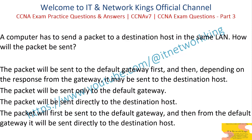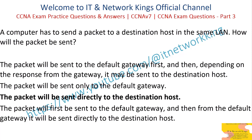A computer has to send a packet to a destination host in the same LAN. How will the packet be sent? The packet will be sent to the default gateway first, and then, depending on the response from the gateway, it may be sent to the destination host. The packet will first be sent to the default gateway, and then from the default gateway it will be sent directly to the destination host. Answer: The packet will be sent directly to the destination host.